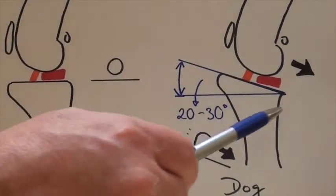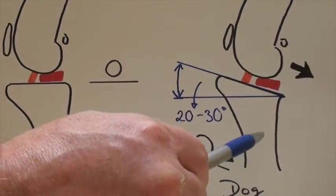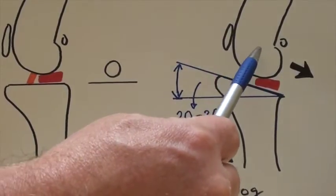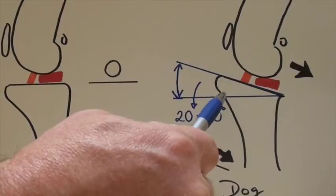In the dog, however, because of the slope effect, when a dog weight bears, all of the force is concentrated at the level of the knee joint. So the femur behaves almost like a ball sliding down a hill, the hill being the slope of the tibia.